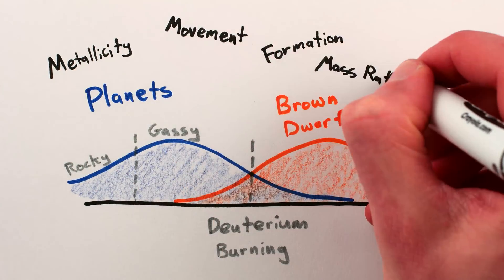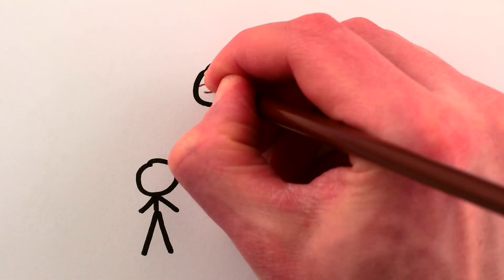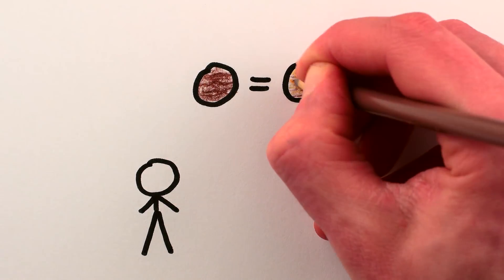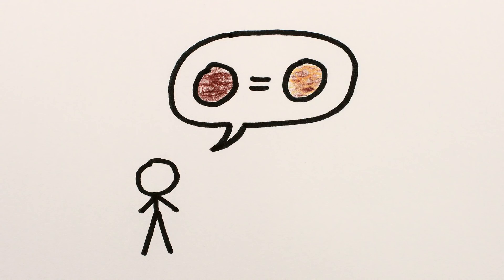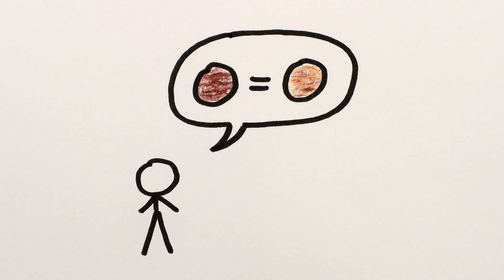I mean, if we didn't have any other good way to distinguish between brown dwarfs and planets, sure, deuterium burning might be a reasonable rule of thumb. It's also possible, as some researchers contend, that there is no real clear way of distinguishing between brown dwarfs and giant planets, and that they really do just exist on a spectrum. But either way, deuterium is more or less a distraction.